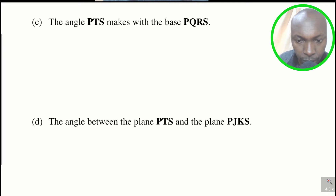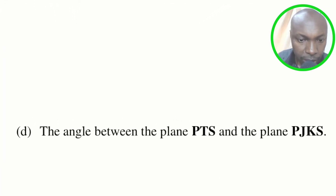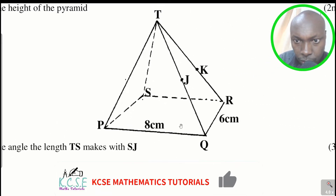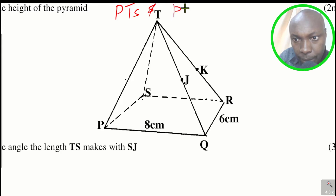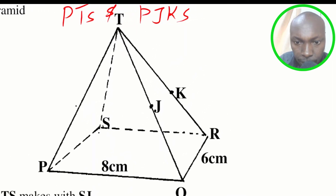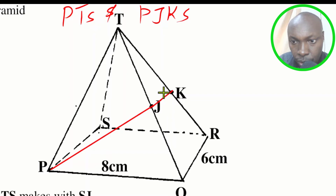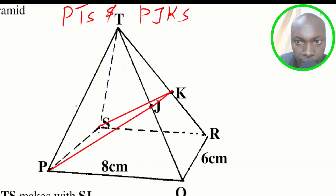Part D of the question asks for the angle between plane PTS and the plane PJKS. Let's go to the diagram and identify the planes. Plane PTS is already drawn, so we need to draw plane PJKS by joining J to B, and from S, joining that line. Now we can see the two planes PTS and PJKS.